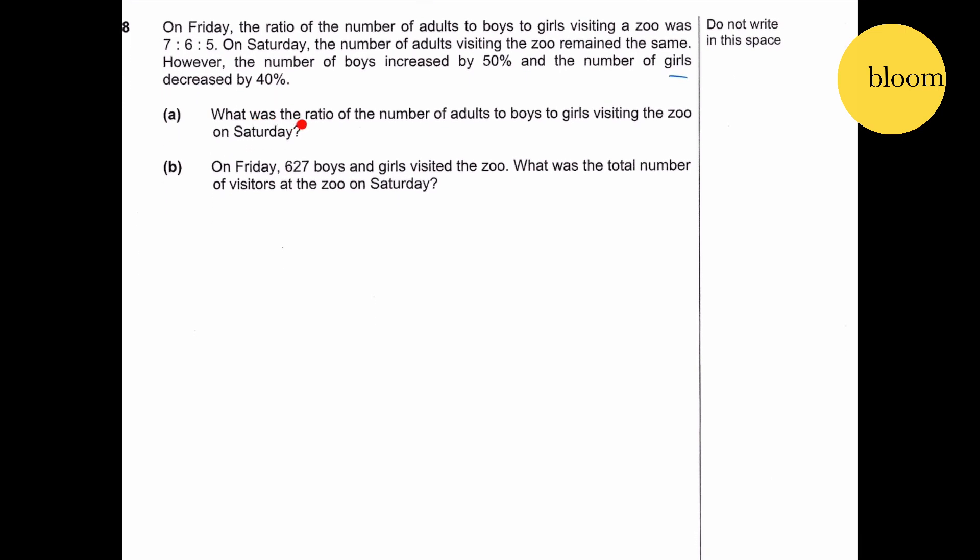Part A: What was the ratio of the number of adults to boys to girls visiting the zoo on Saturday? So Friday we have adult to boy to girl is 7, 6, 5. Saturday, adults remain the same, so 0 percent, neither increase nor decrease. Boys increase by 50 percent, while girls decrease by 40 percent.